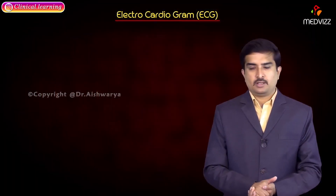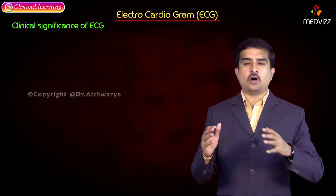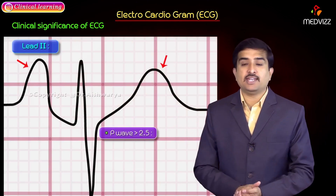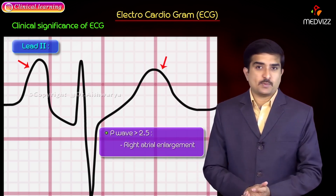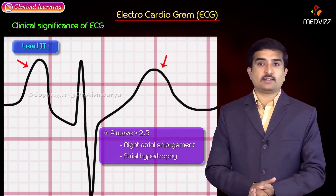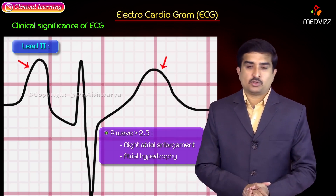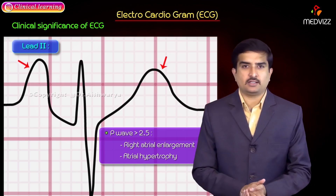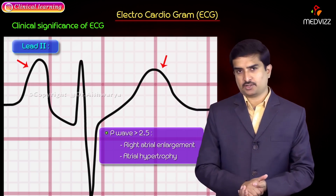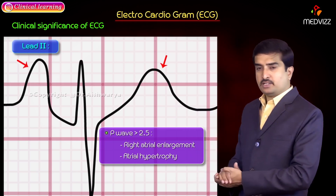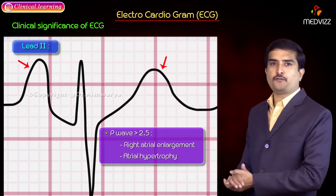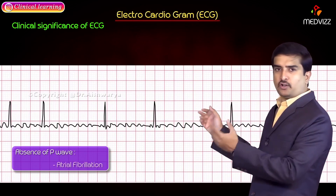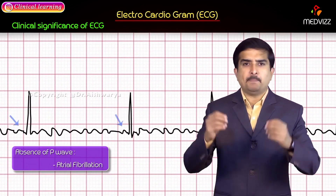Regarding the clinical significance of ECG waves: P wave size is increased in right atrial enlargement if greater than 2.5 mm. Loss of P wave indicates a problem with atrial depolarization. In atrial hypertrophy there will be tall P waves. In conditions like atrial fibrillation, the P wave is absent because the atria is not contracting at all.